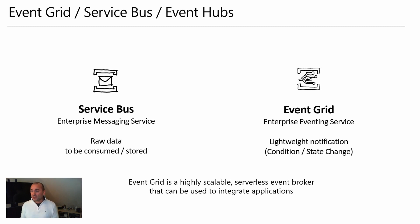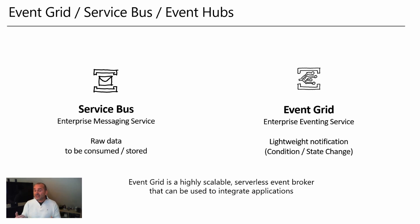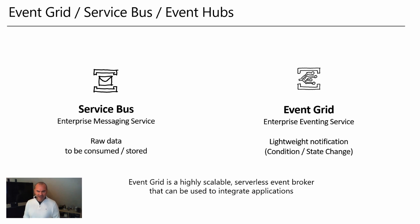When we think about eventing functionality, think about lightweight notification scenarios — a condition change or a state change, like a device has been connected, disconnected, or created. It's not always black and white; there's a gray area. We specifically see this in the way IoT Hub has implemented eventing, because we have both telemetry and device events. When IoT Hub pushes telemetry events to Event Grid, you also get the whole payload of the message from the device — so you should keep it lightweight and not push events with very large payloads.